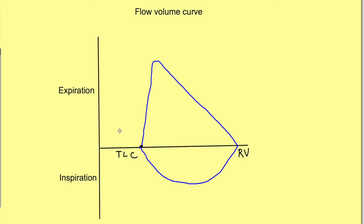The flow-volume curve is used to study the flow rates of air as we exhale forcefully and maximally from total lung volume down to residual volume. We ask the subject to fill his lungs maximally to total lung capacity and then exhale forcefully and maximally to determine the flow rates.